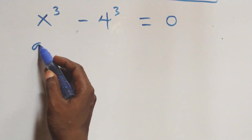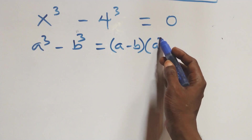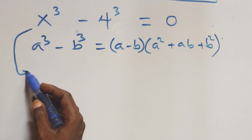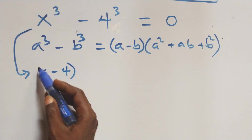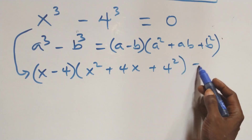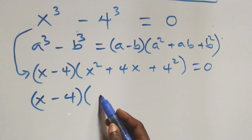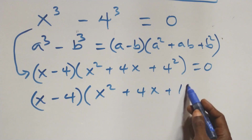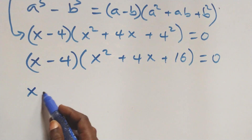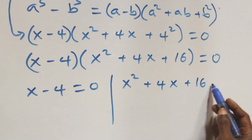Solving for the second case, we follow that a raised to the power three minus b raised to the power three is the same as a minus b, into brackets, times open brackets a squared plus ab plus b squared. Applying this, it becomes x minus four, into brackets, times open brackets x squared plus four x plus four squared, close brackets, equals to zero. And here we have two possible cases: first, x minus four equals to zero, or we have x squared plus four x plus sixteen equals to zero.